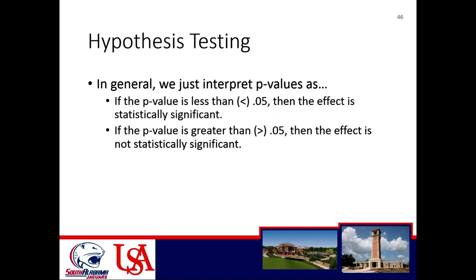To summarize p-value interpretation: if the p-value is less than 0.05, the effect is statistically significant — we observed the effect in our data. If the p-value is greater than 0.05, the effect is not statistically significant — we cannot reject the null hypothesis, and we cannot assume that our proposed hypothesis is true.